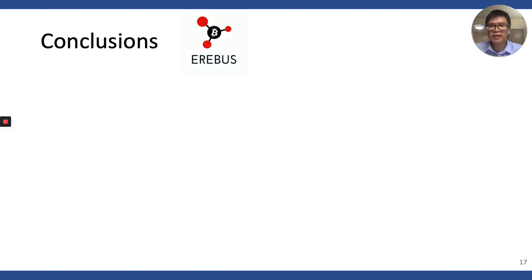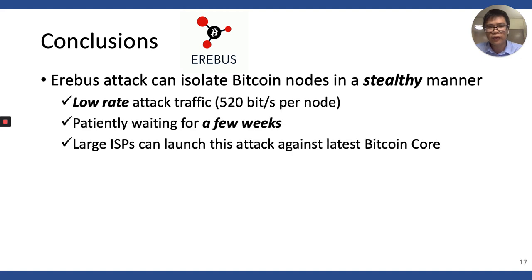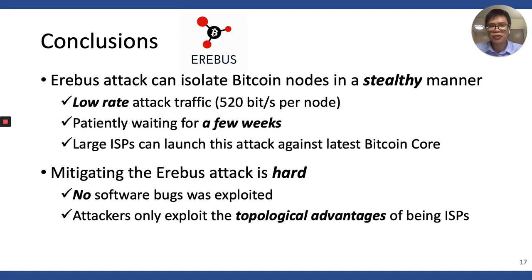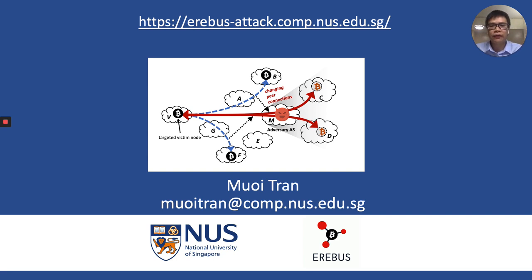In this talk, we presented the EREBUS attack, a partitioning attack that can isolate a Bitcoin node in a stealthy manner with a low rate of attack traffic and several weeks of patient execution. We demonstrate that a large ISP can perform this attack against almost any Bitcoin node with the latest version. Mitigating the EREBUS attack is unfortunately challenging because it exploits no software bugs, but only the topological advantage of being a large ISP. For more updates on the countermeasures, please visit our website at erebus-attack.comp.nus.edu.sg. Thank you for listening.